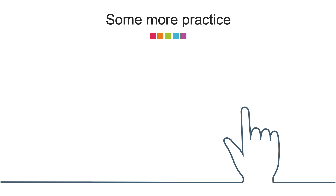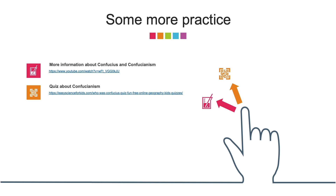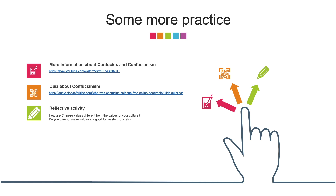This is the end of today's lesson. But if you would like to learn more about Chinese values, here are some extra practices you can do. There is a link to a video where you can learn more about Confucius and Confucianism. There is also a link to a quiz about Confucianism — this quiz is designed for kids so it won't be too difficult. Lastly, I would like you to do some reflective thinking: how are Chinese values different from the values of your own culture? And do you think Chinese values are good for Western society? Don't forget to have fun! I'll see you next week!